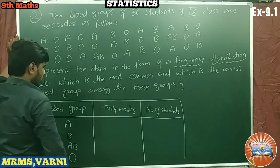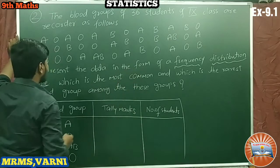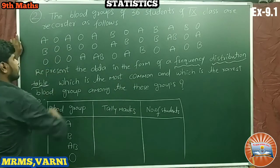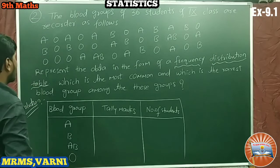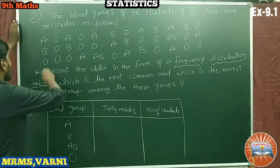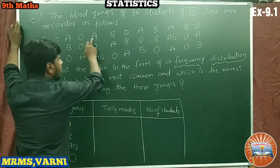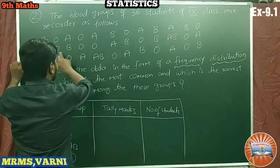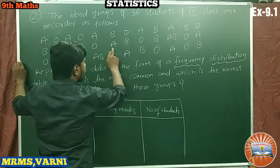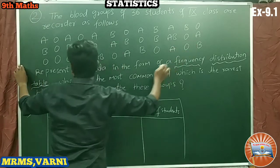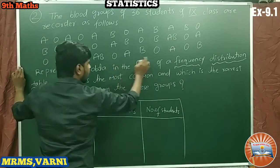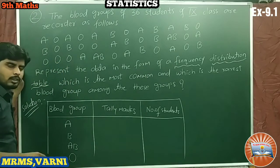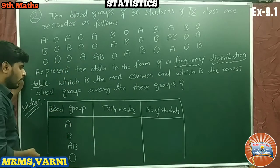So how many students are having blood group A? Counting through the data: 1, 2, 3, 4, 5, 6, 7, 8, 9, 10. So 10 students are having blood group A.